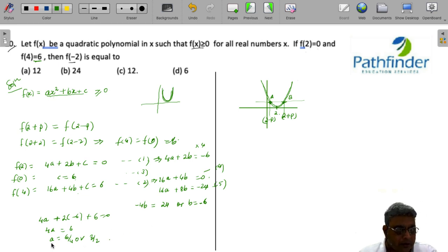So we got the value of both, all the three, a, b and c. So our function, the quadratic polynomial becomes a x², that is 3 by 2 times x²